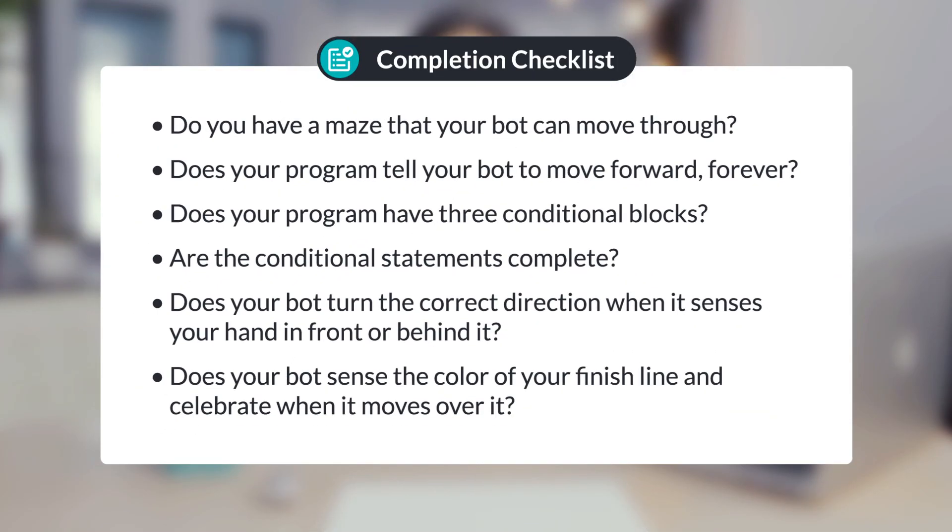Let's check your work. Do you have a maze that your bot can move through? Does your program tell your bot to move forward forever? Does your program have three conditional blocks? Are the conditional statements complete? Does your bot turn the correct direction when it senses your hand in front or behind it? Does your bot sense the color of your finish line and celebrate when it moves over it?